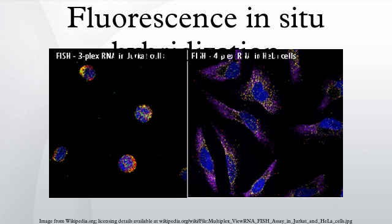FISH on sperm cells is indicated for men with an abnormal somatic or meiotic karyotype as well as those with oligospermia, since approximately 50% of oligospermic men have an increased rate of sperm chromosome abnormalities. The analysis of chromosomes 21, X, and Y is enough to identify oligospermic individuals at risk. In medicine, FISH can be used to form a diagnosis, to evaluate prognosis, or to evaluate remission of a disease such as cancer. Treatment can then be specifically tailored.